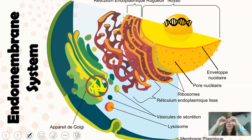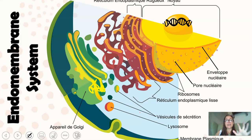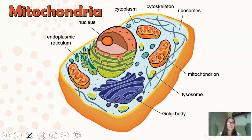The transport vesicle fuses with the Golgi because both are made of lipid bilayers. Inside the Golgi, the polypeptide is packaged, modified, sorted, and prepared. Then another transport vesicle sends it to the cell membrane, where it fuses via exocytosis and exits the cell. Sometimes those proteins become part of the cell membrane itself — functioning as protein receptors, ion channels, or glucose transporters.